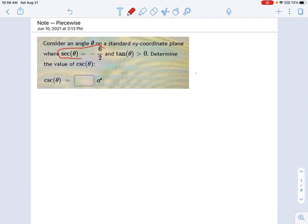I'm told that the secant of that angle is negative 6 over 2, and the tangent of that angle is positive. And then we're told, figure out from these clues what is the cosecant of theta.